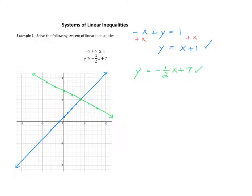I'm going to start with this region down here. I'm going to choose the point zero zero as a test point and see if it works in both of those inequalities. If I put it in the first inequality, I get negative zero plus zero is less than or equal to one, which is zero is less than or equal to one. So we're good for the first equation. If I plug it into the second equation, I get zero is less than or equal to negative one half times zero plus seven. This simplifies to zero is greater than or equal to seven. No, this is false. So unfortunately, this test point that I chose is no good. It means this entire region cannot work.